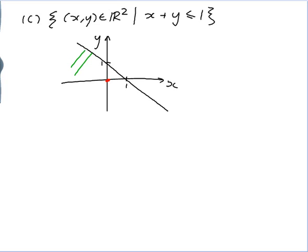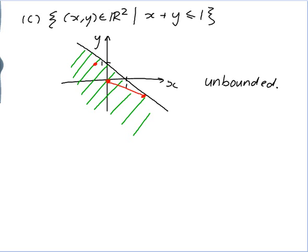So I want the bit below the line. It's still unbounded — it still goes on forever. And this one is convex as well. If I pick two points in my set and join them, the whole line segment is in the set. I believe that would be true for any two points in the set, even ones right on the boundary. So yes, it is convex.